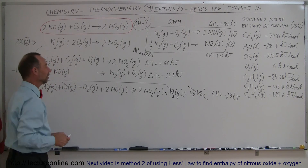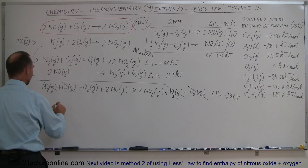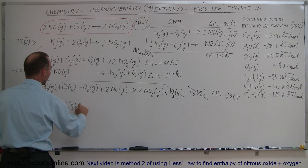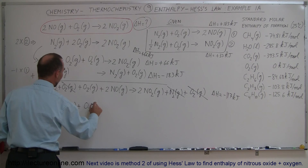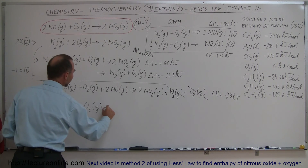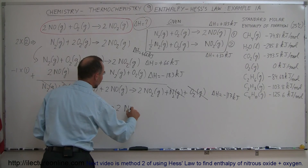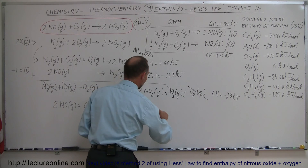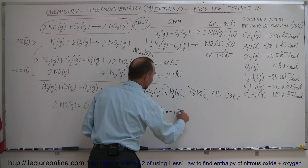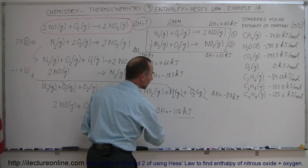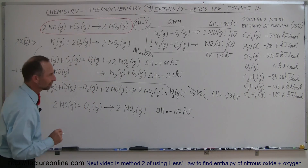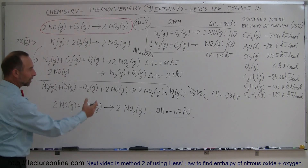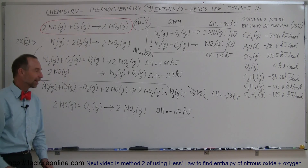Looking at the other side, I see I have 2 moles of nitrogen dioxide as a product, and in the target equation I also have 2 moles of nitrogen dioxide as a product — bingo, I have the exact equation. Let me rewrite it: 2 moles of nitrogen monoxide gas plus 1 mole of oxygen gas reacts to form 2 moles of nitrogen dioxide gas, which means the enthalpy change for that reaction is equal to minus 117 kilojoules.